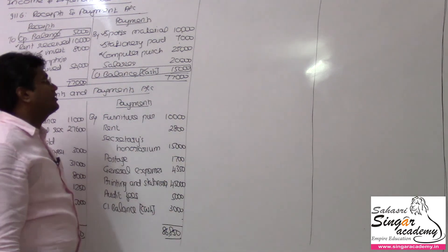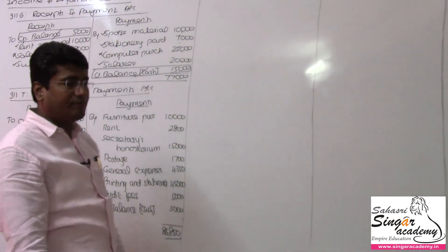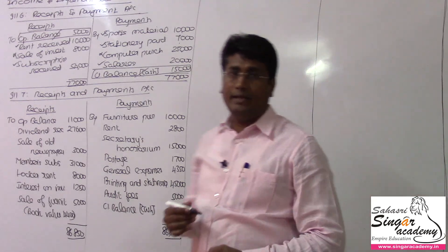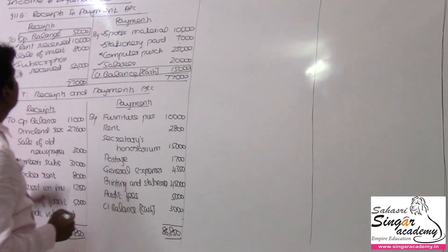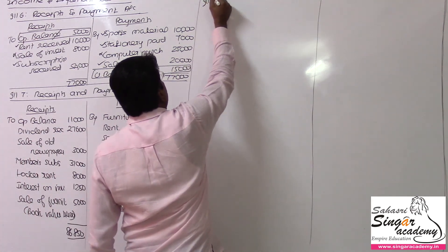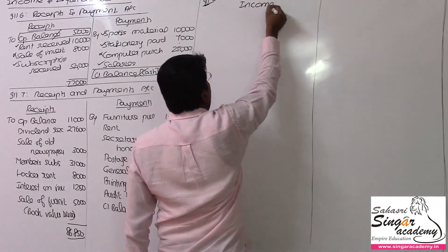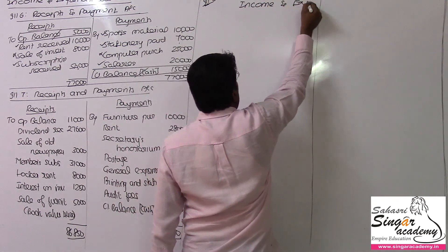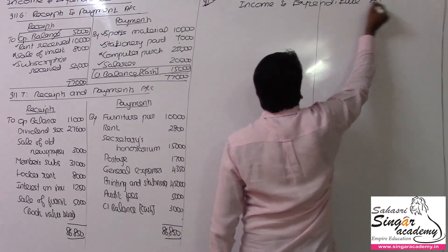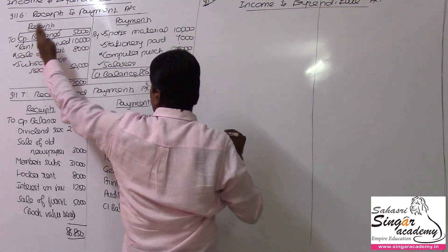Stationery paid is revenue - debit it in the usual manner. Computer purchase is an asset, so only depreciation is debited, not the asset itself. Salaries are revenue expenditure and will come in the usual manner. Now for illustration number 6, we prepare the income and expenditure account.